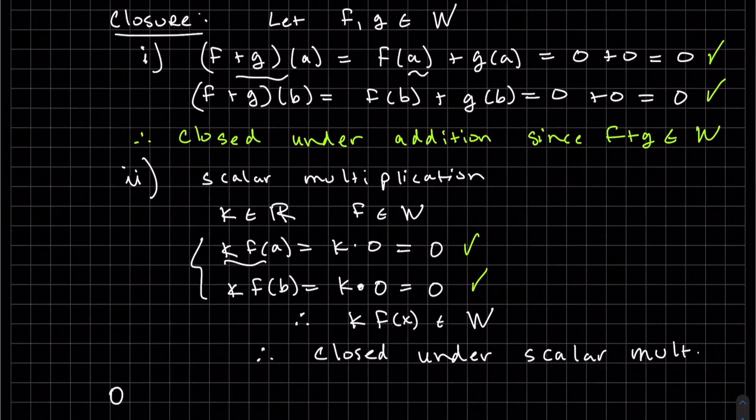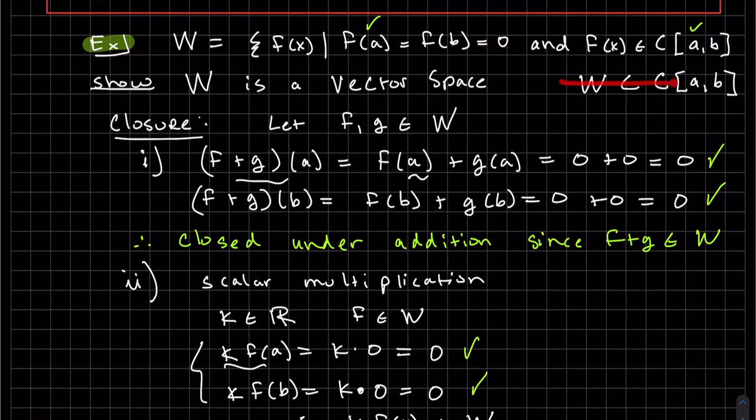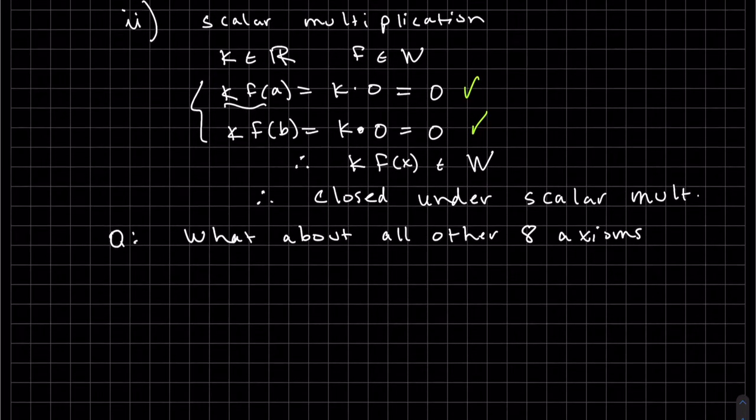Question before we go on: what about the other eight axioms? Well, W is a subset of all continuous functions, which is a parent set. So we don't need to show all the other axioms because of that.